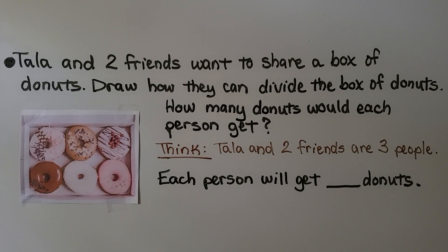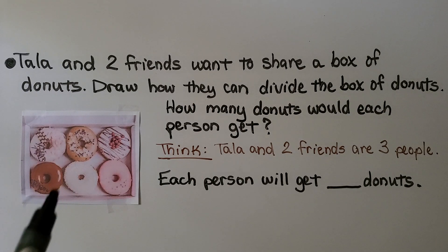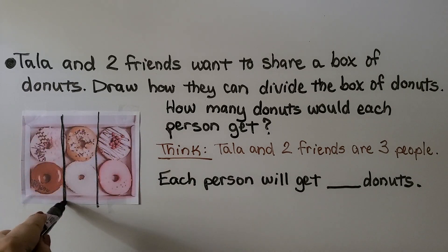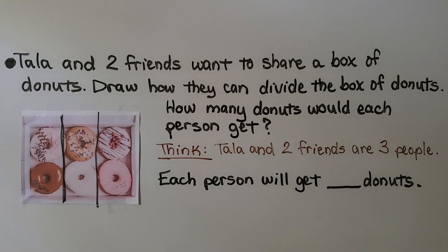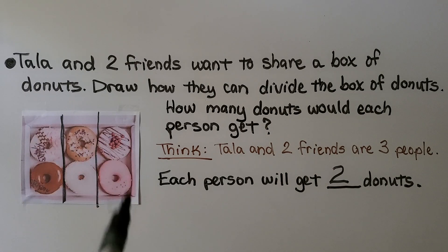Tala and two friends want to share a box of donuts. Draw how they can divide the box of donuts. How many donuts would each person get? Tala and two friends are three people total. If you divide the box into thirds like this, they would each get two donuts — one of three equal parts. We split the box into thirds, so they would each get one third of the box, which is two donuts.